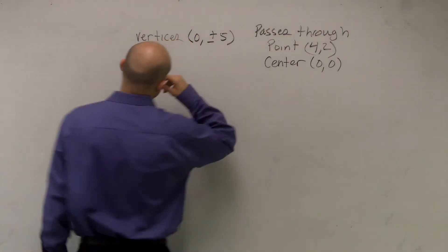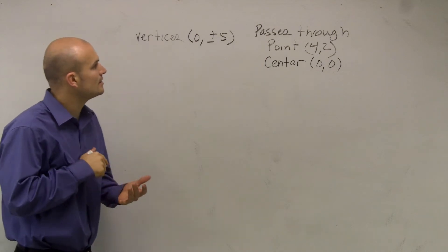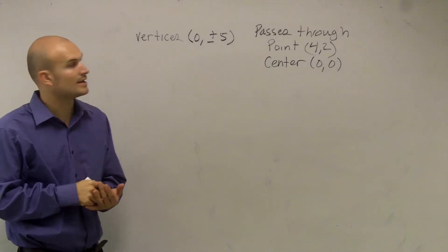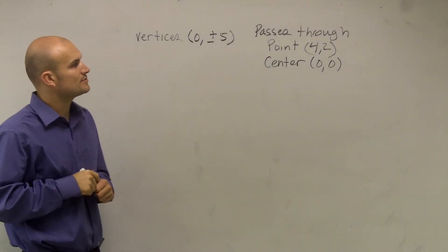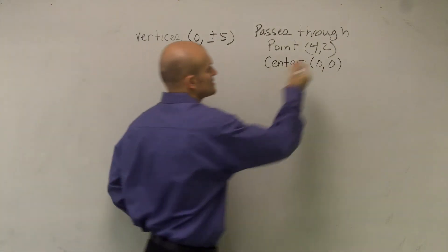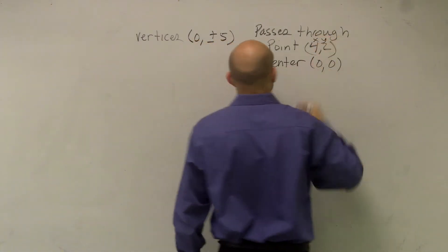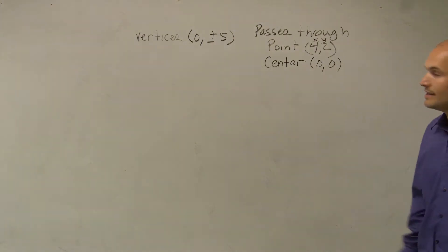Okay, so we have two vertices: (0, 5) and (0, -5). We also know it passes through the point (4, 2), which I saw you write up there, read as an X-Y coordinate, and it goes through the center (0, 0).